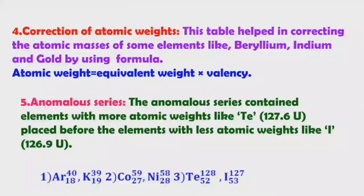There are three anomalous pairs: argon–potassium, cobalt–nickel, and tellurium–iodine. For argon and potassium: argon has atomic number 18 and potassium has atomic number 19, but argon's atomic weight is 40 while potassium's is 39. If arranged by atomic number, potassium follows argon; if arranged by atomic weight, argon follows potassium. The same situation applies to cobalt–nickel and tellurium–iodine.